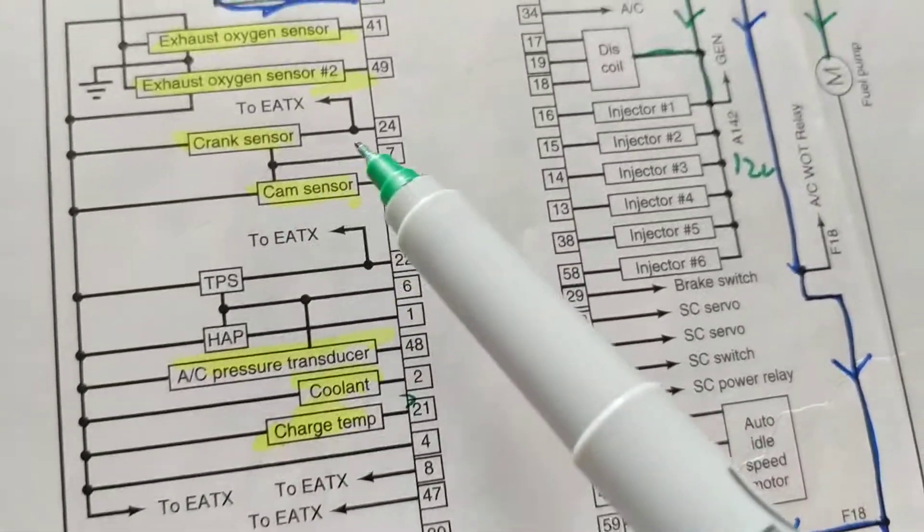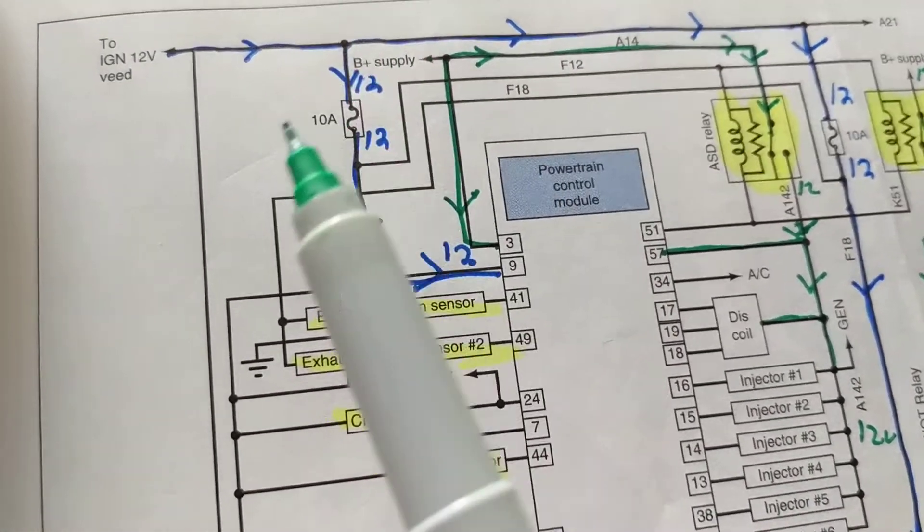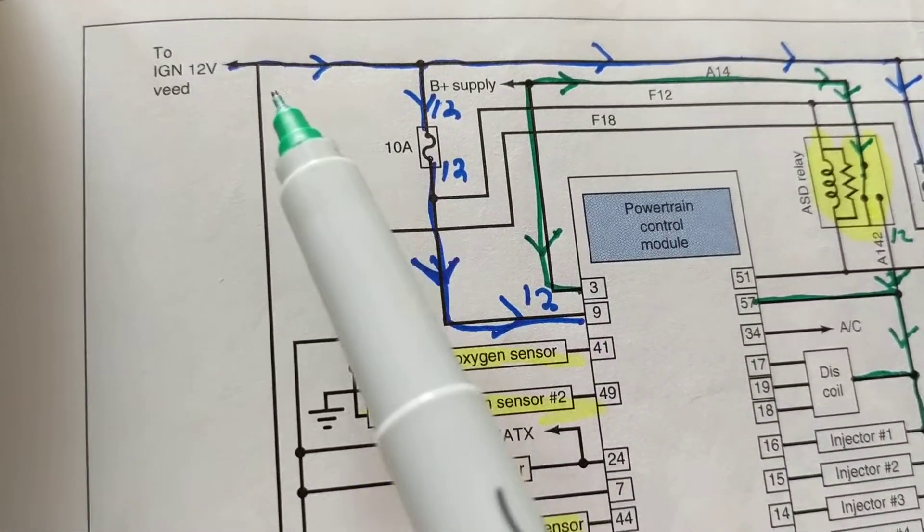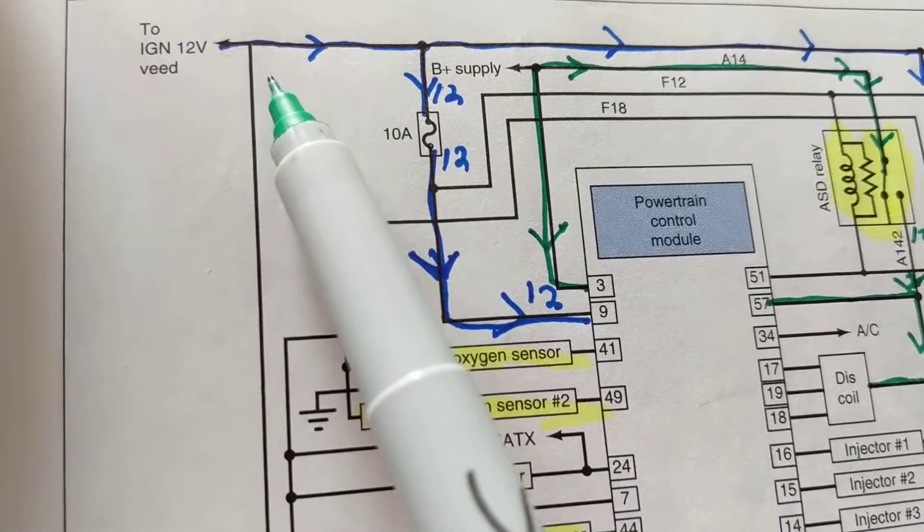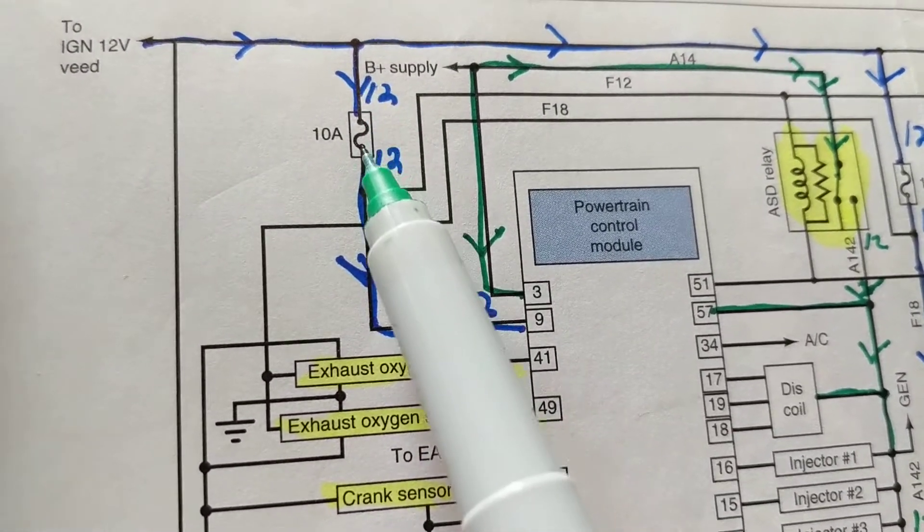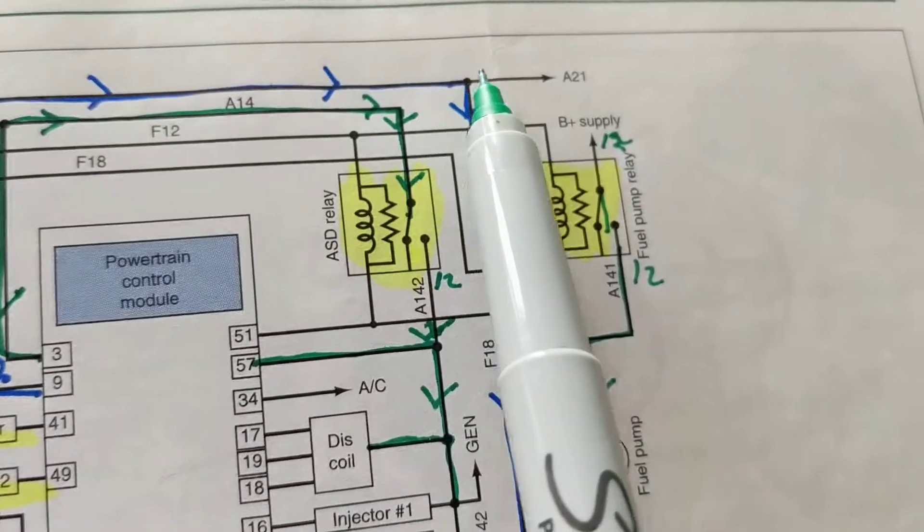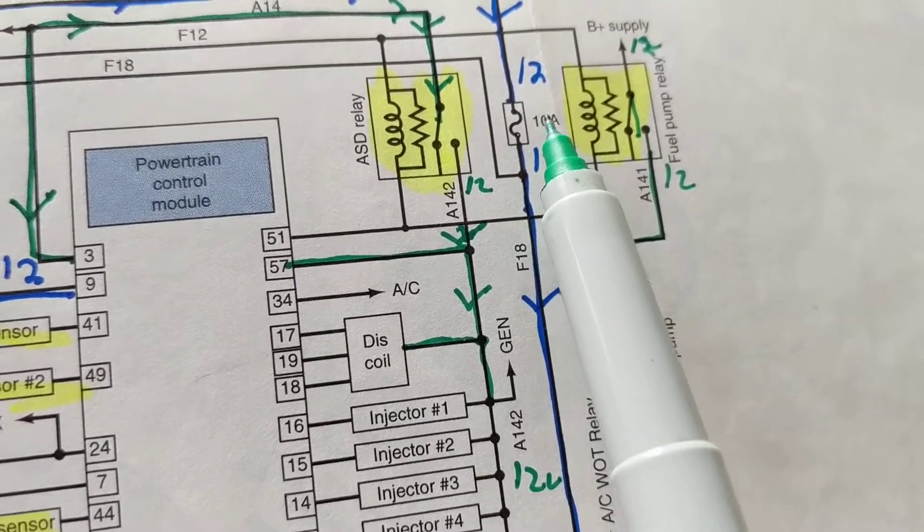So therefore this number one, as in any modular computer, we always need a B+. That has not changed, will never change. So the B+ comes from the ignition from here, goes through this fuse, and it goes to pin nine.